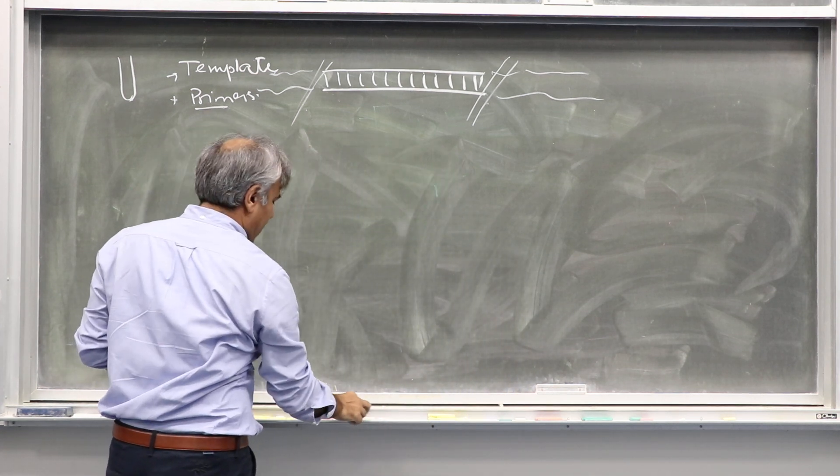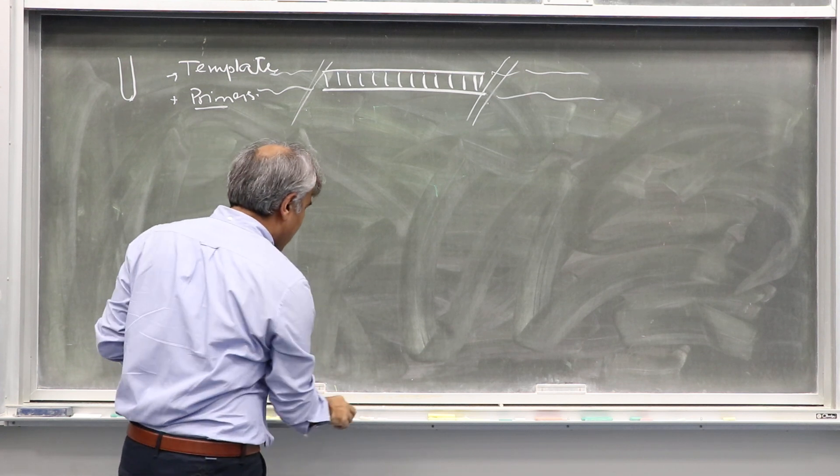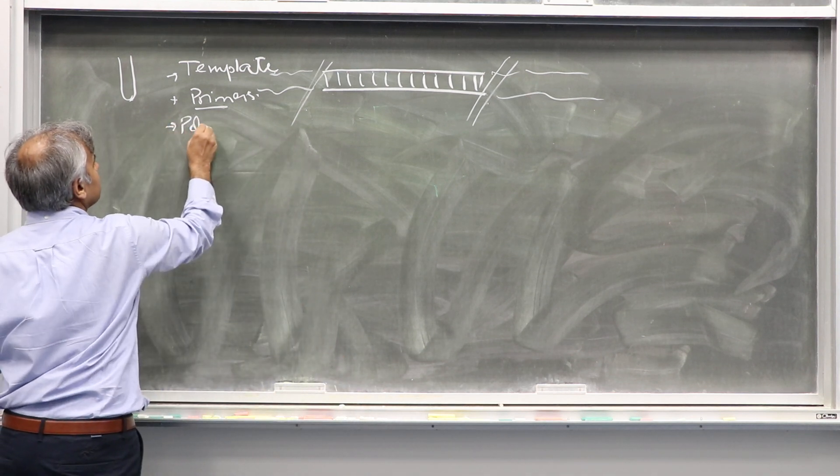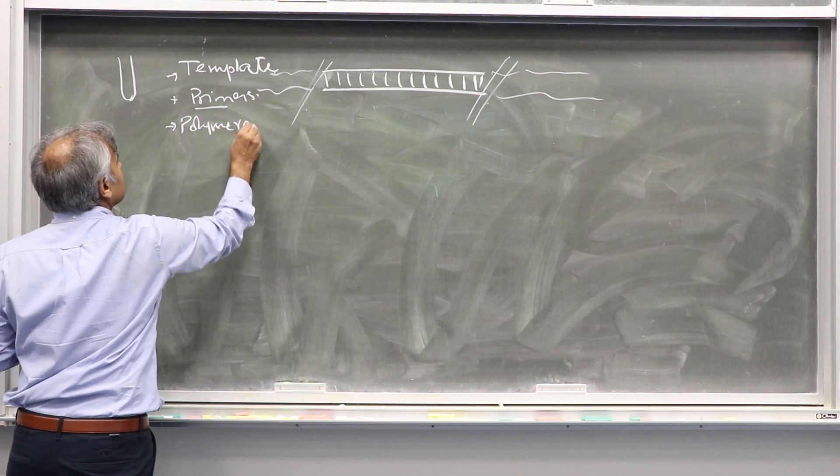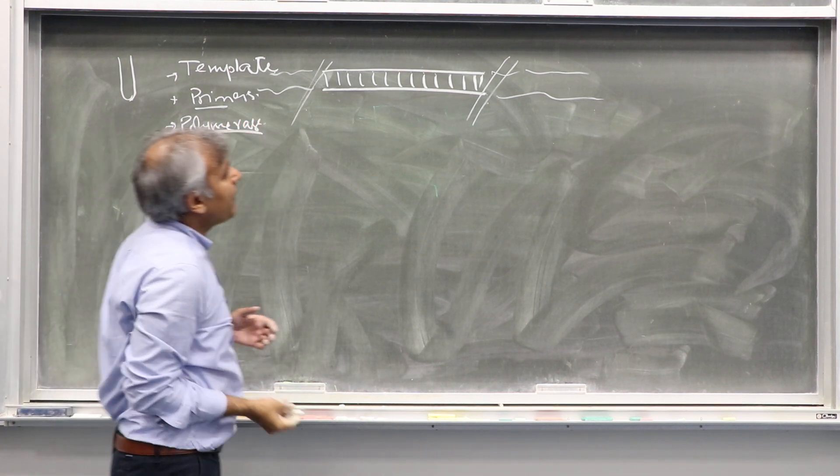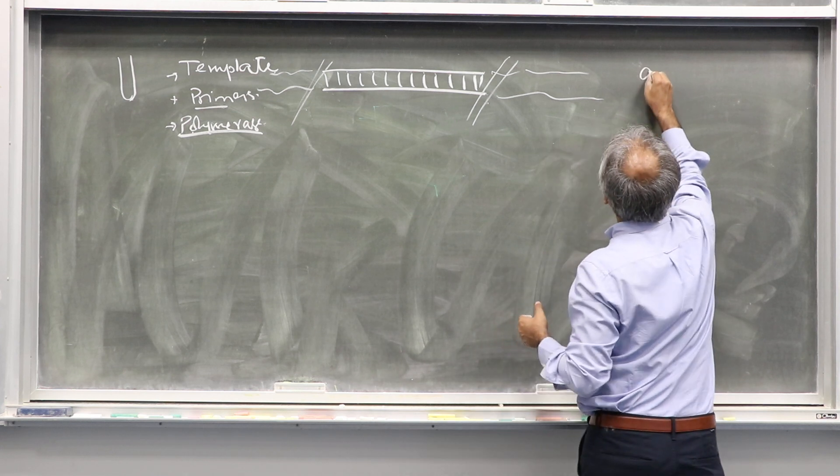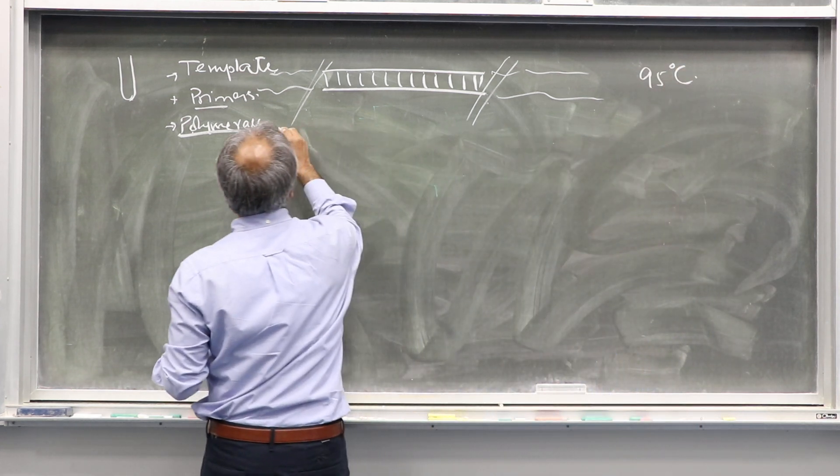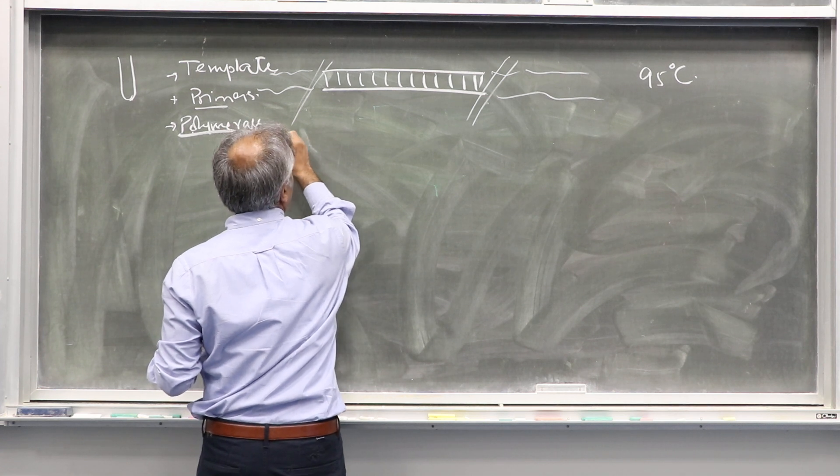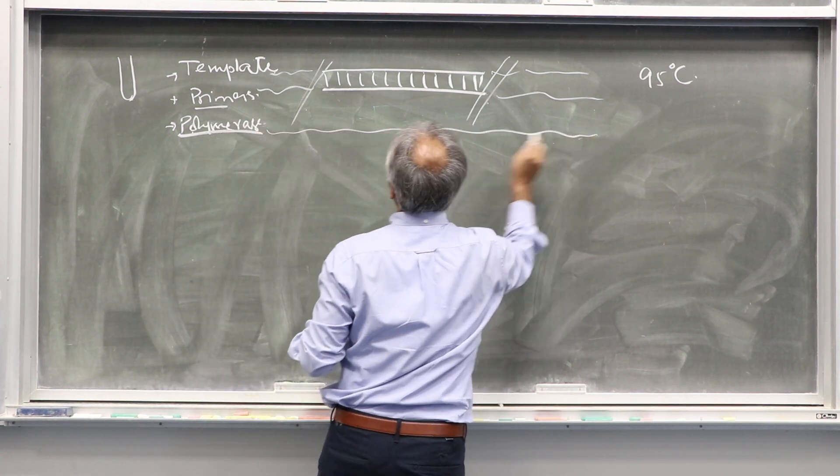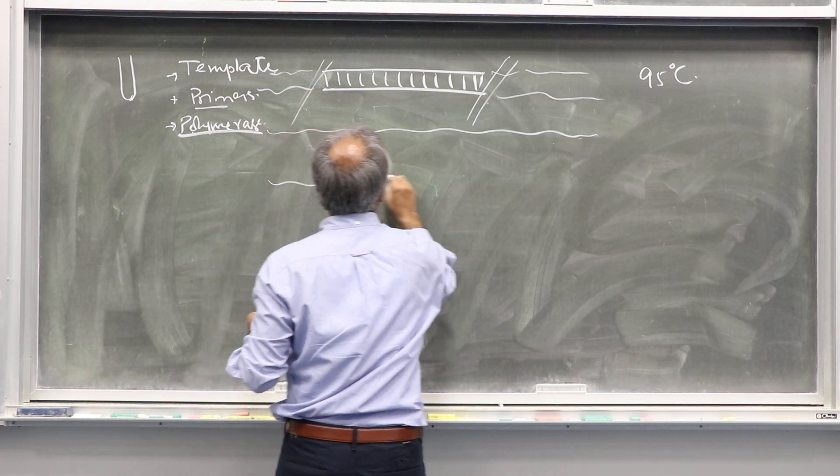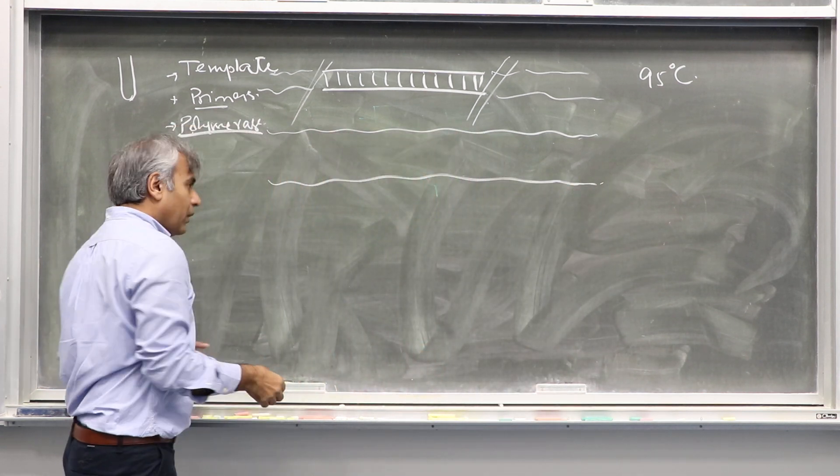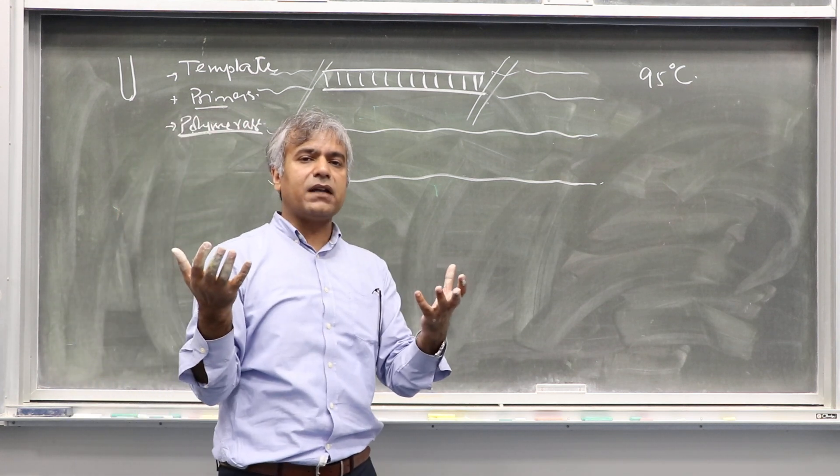We have added primers and the next thing we need is a polymerase. Remember, we heated DNA at 95 degrees Celsius and the template denatures into two single-stranded molecules.